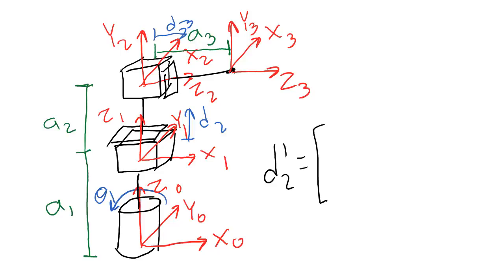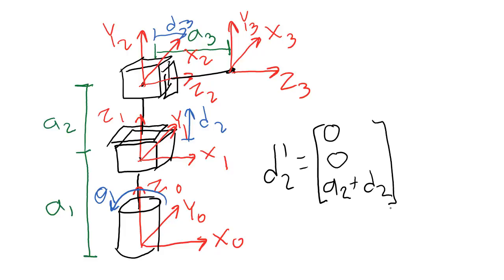Now let's do d12, the displacement from the center of frame 1 to the center of frame 2. Right now it looks like that displacement is entirely in the z1 direction and the amount is a2, the link length, plus d2, the amount that joint variable has moved. The displacement in x and y directions are both 0. As d2 becomes larger, the center of frame 2 is going to move up in the z1 direction, but it will never change its position in x and y directions.